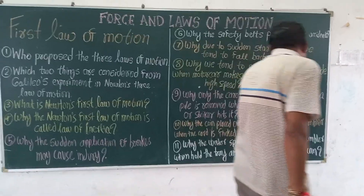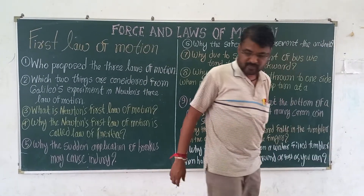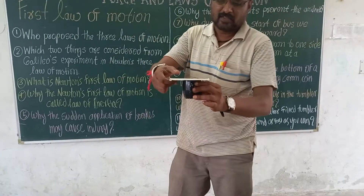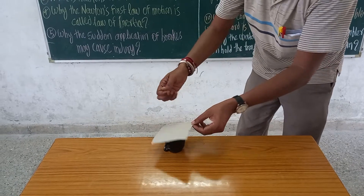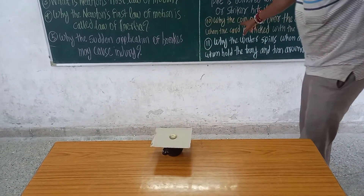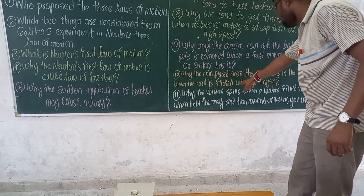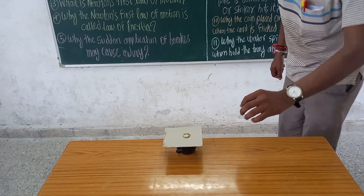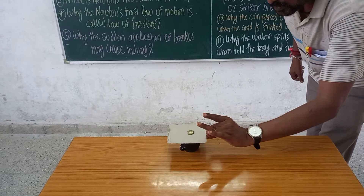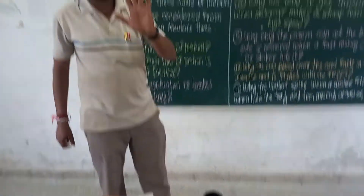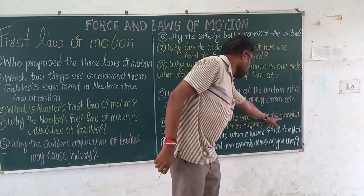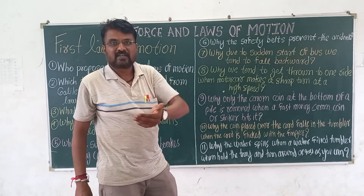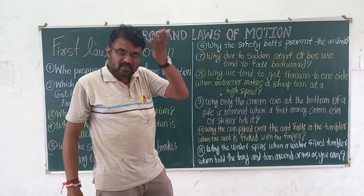Why does a coin placed over a card fall into the tumbler when the card is flipped with a finger? This is the same experiment I showed earlier. I applied the force on the card only — this force is not applied on the coin. So the coin maintains its inertia and falls into the tumbler rather than moving with the card.